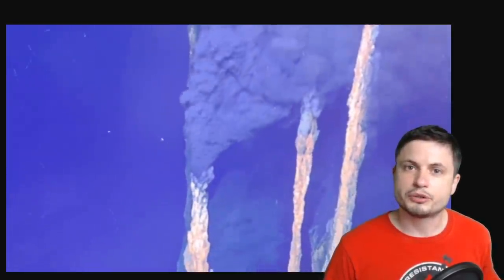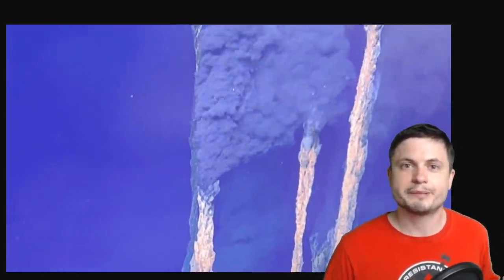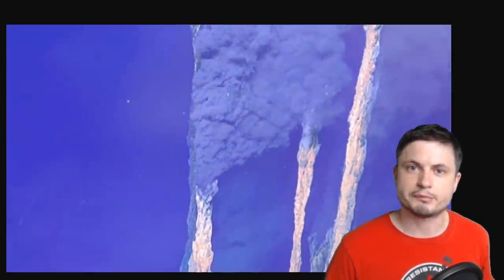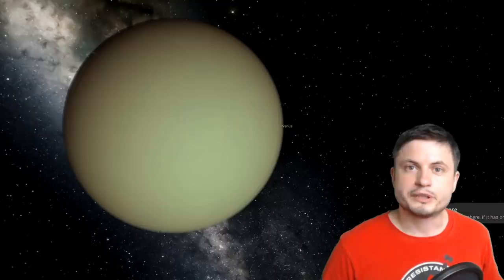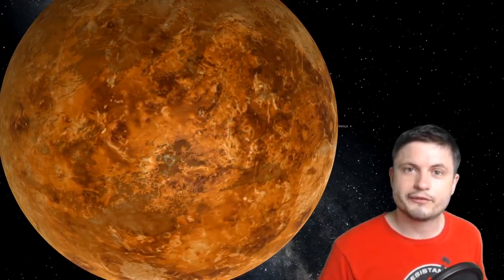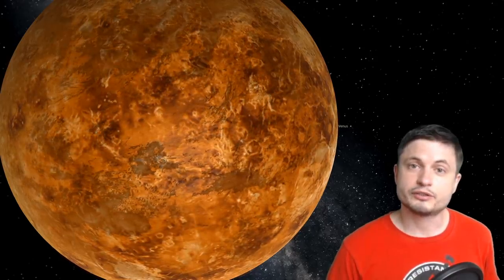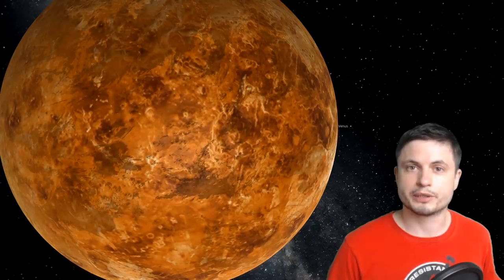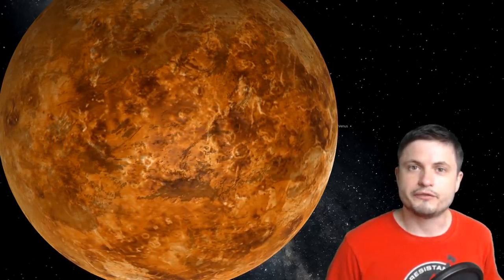The best example of how supercritical fluids can shape a planet comes from the nearest planet to us, our neighbor Venus. So here, if we were to look under the atmosphere, we would actually discover a very unusual and somewhat difficult to imagine surface of a planet where it's very possible that the carbon dioxide here act like a supercritical fluid. Now, we know that Venus today spins extremely slow.